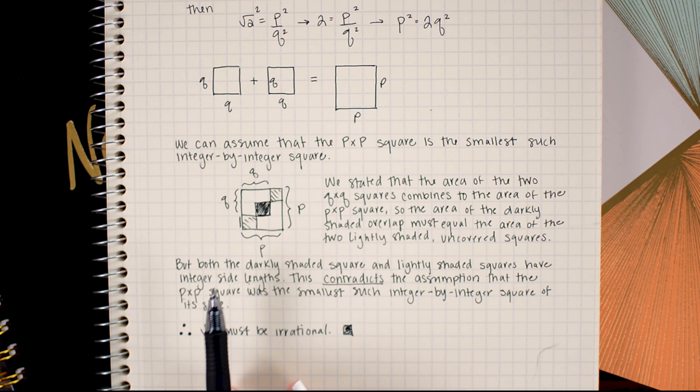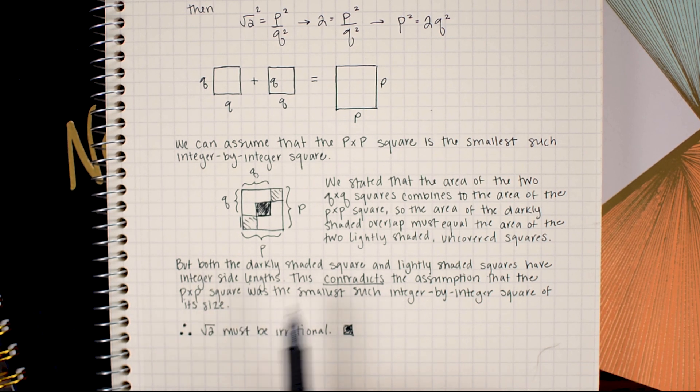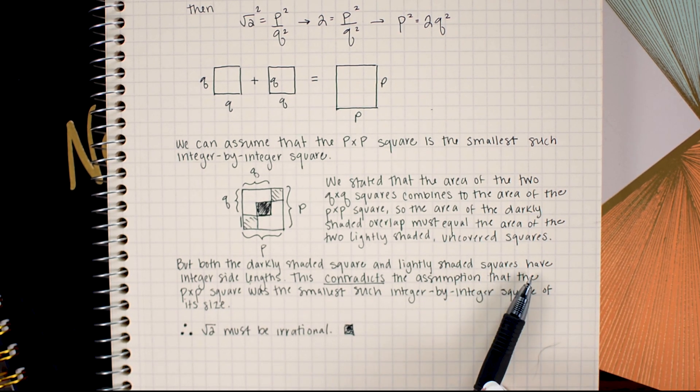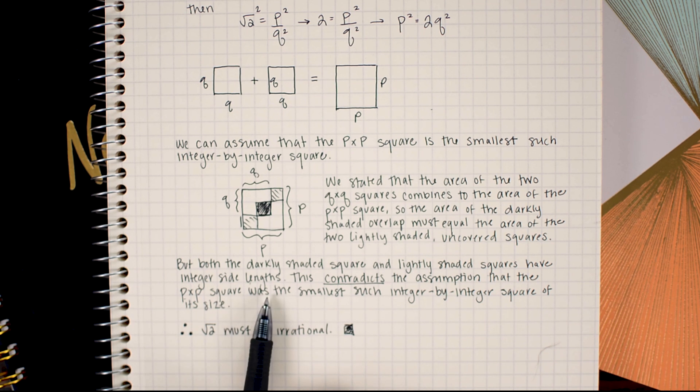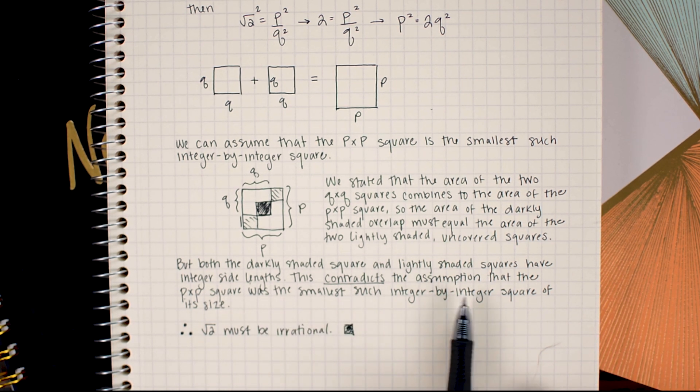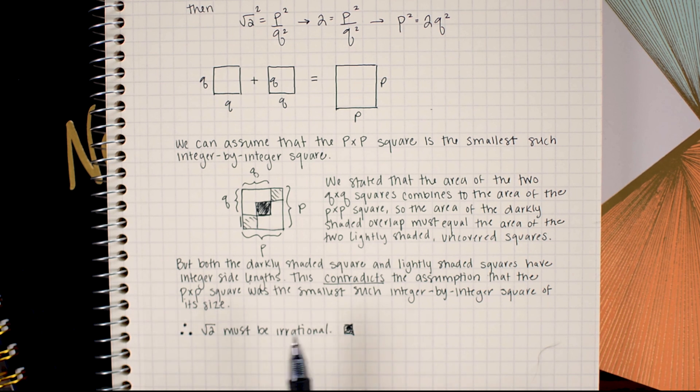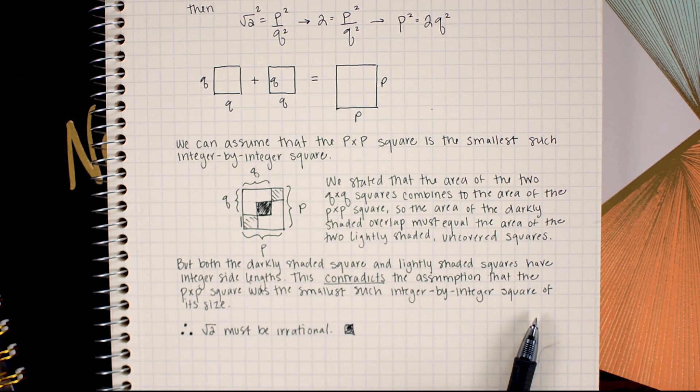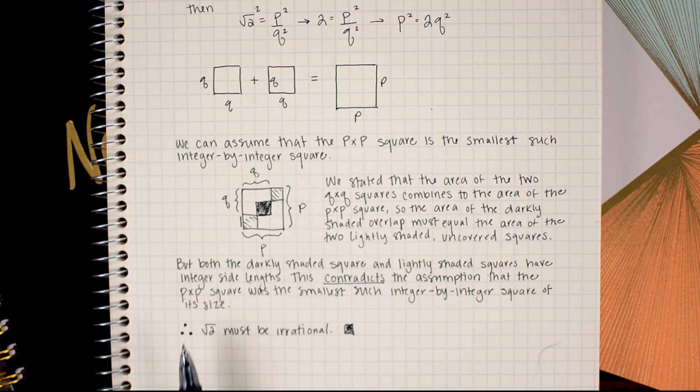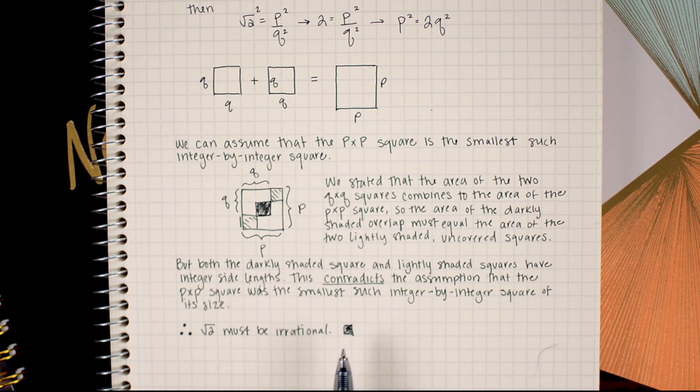So I concluded by just writing out that both the darkly shaded square and the lightly shaded squares have integer side lengths and this contradicts the assumption that the p by p square was the smallest such integer by integer square of its size we could make. Therefore, square root 2 must be irrational.